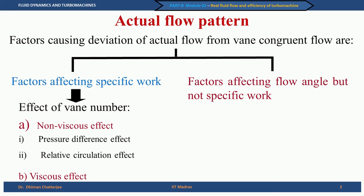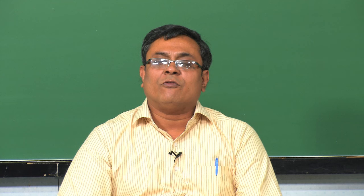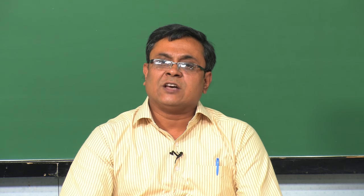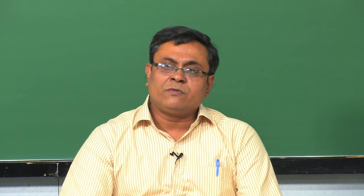The second assumption was that vanes are of negligible thickness. In vane congruent flow, we assumed infinite number of vanes with infinitesimally small thickness. In reality, because of stress considerations or manufacturing difficulties, we cannot have vanes with negligible thickness. We must consider the effect of finite vane thickness. We will start without relaxing the effect of viscosity — that is, we first consider no viscous effect, just the number of vanes being finite instead of infinite.